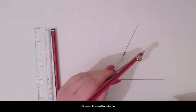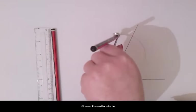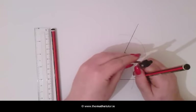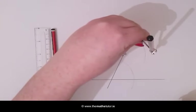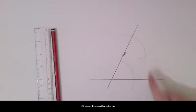We then place our compass on our point A and draw another arc. We then measure the width of our lower arc and, moving our compass to our upper arc, we draw an intersecting arc across the one that was already there.